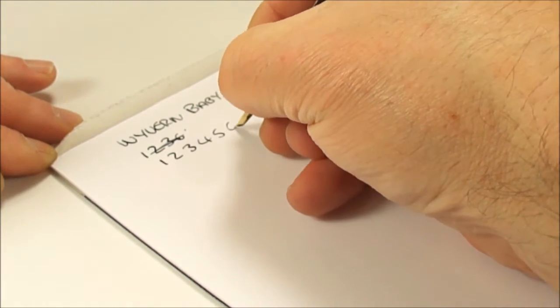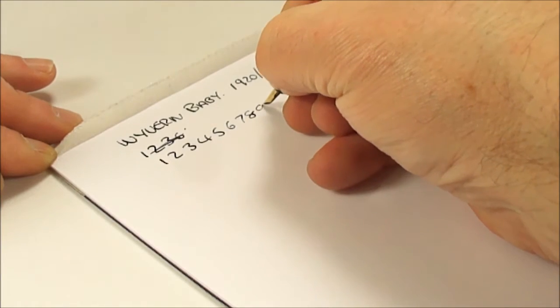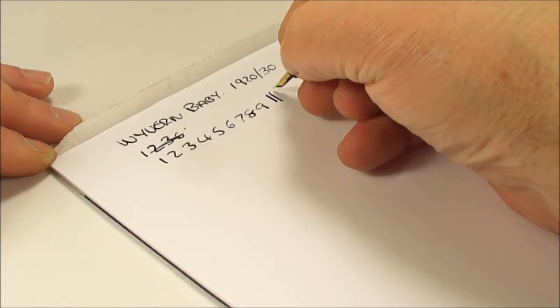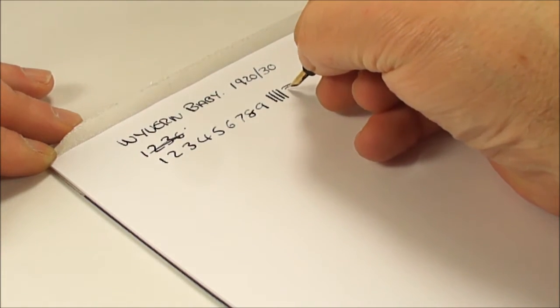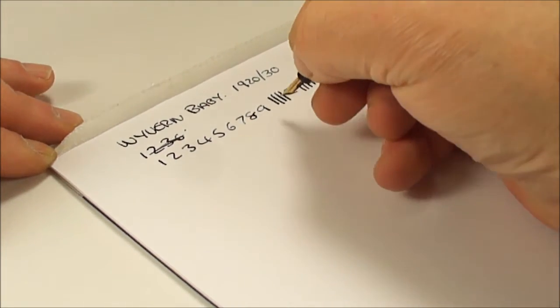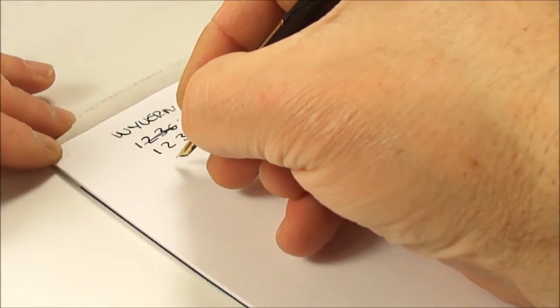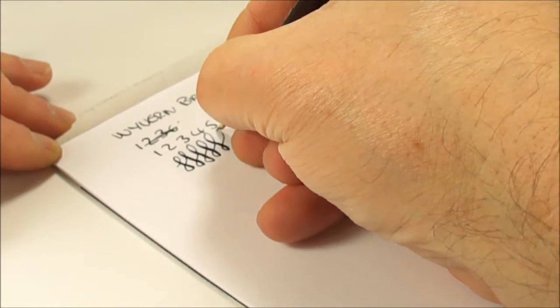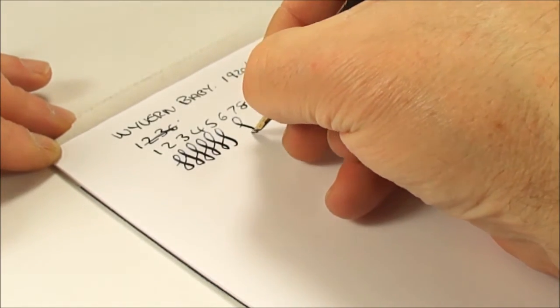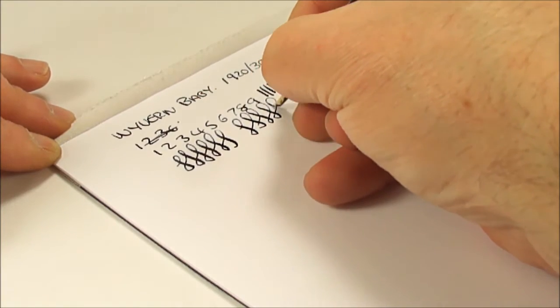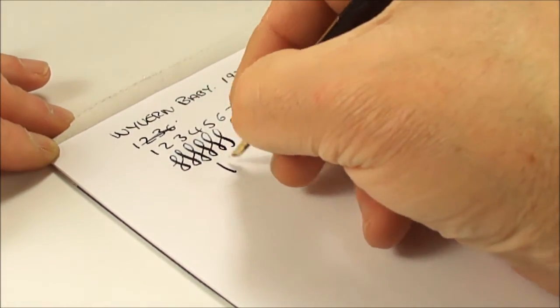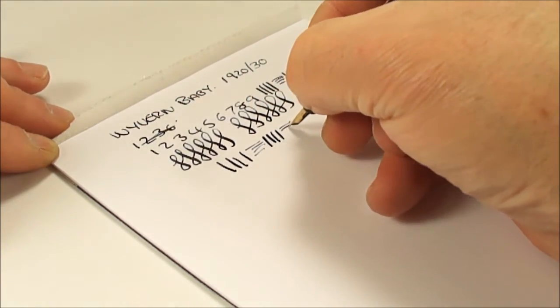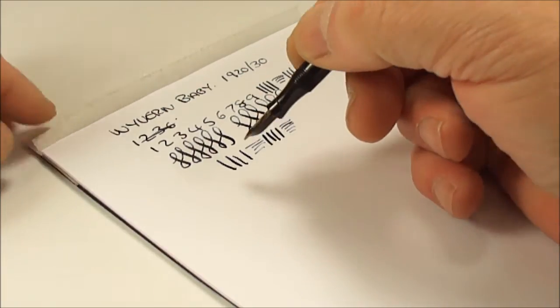There we go, it's writing. Now let's see if we've got a little flexibility in the nib. And the answer is, I would say yes, there's a little bit of flexibility in the nib. And if we do the figure of eights like so, you can see on the downward stroke we're getting a broader line than the cross stroke.